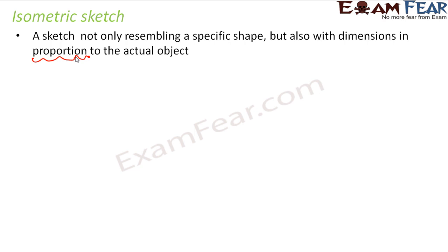In the case of an isometric sketch, even if the dimension doesn't measure exactly three centimeters, it is ensured that the length of each side of the cube is equal, so proportionality is maintained. For example, if you draw a cuboid with length four centimeters and width two centimeters, you maintain the ratio — drawing length as two and width as one — so the ratio is preserved.